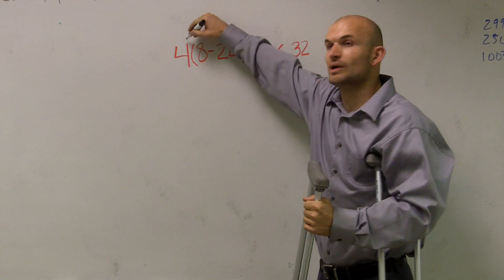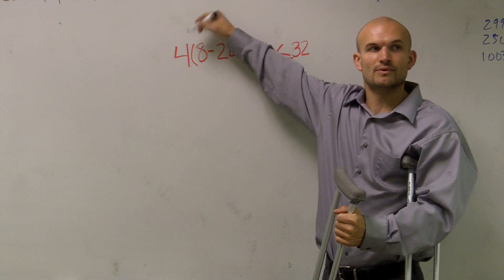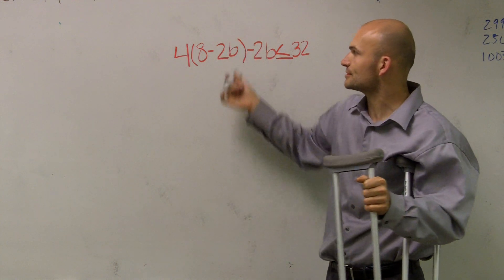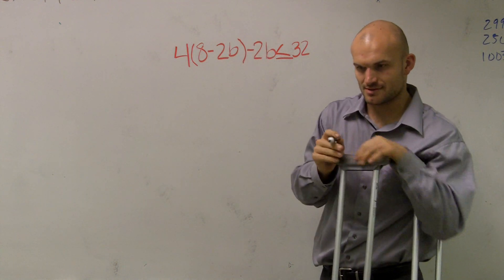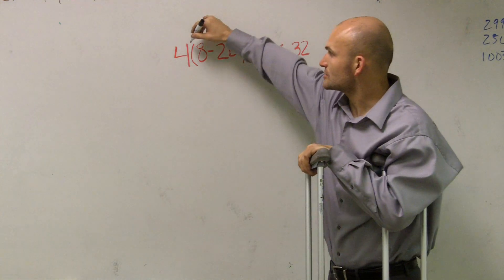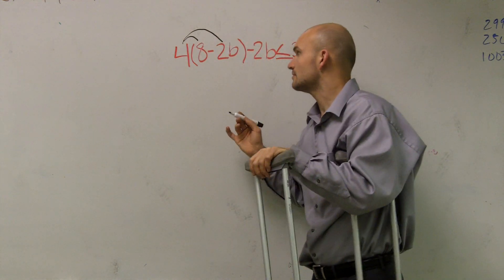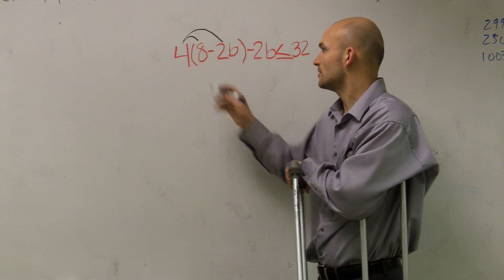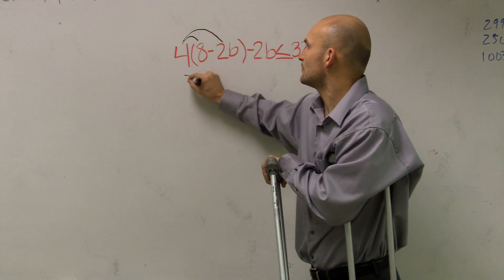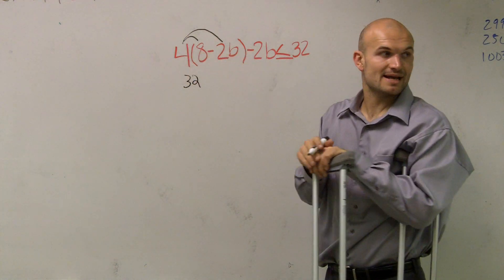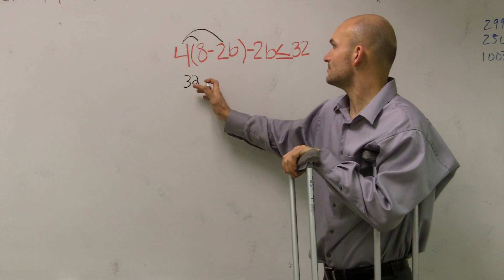So remember, when we have a number outside of parentheses, we have our multiplication. So we need to make sure we multiply our four times eight and our four times negative two. Four times eight equals 32, and four times negative two gives you negative eight b.